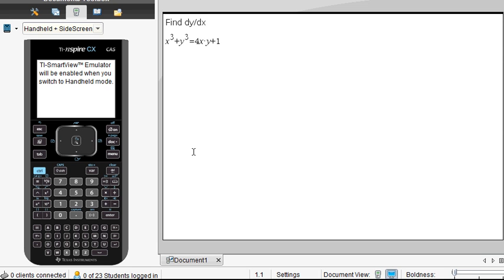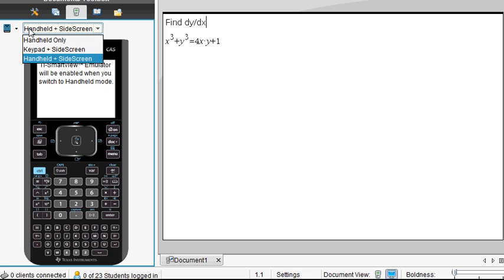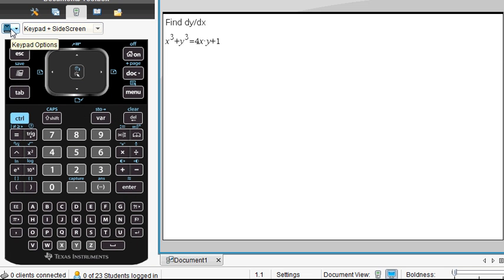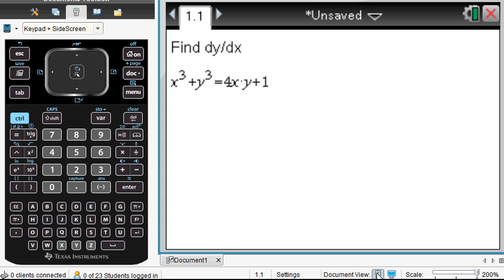So let's take a look at this implicit differentiation. First off, let's make it so it's a little easier to see. We'll change it to the keypad in the side screen in these keypad options. And let's also make the document view the handheld. So it looks like the, there it is, that's what it looks like on the handheld.